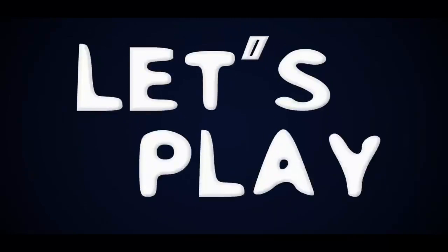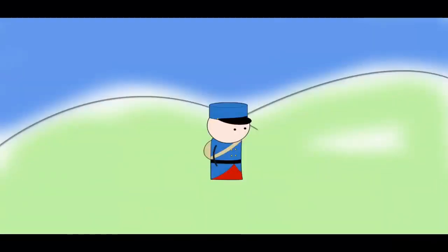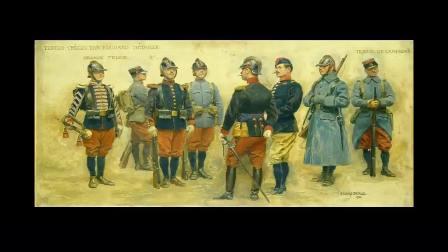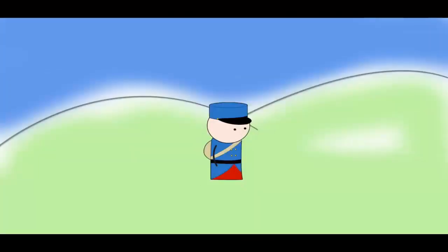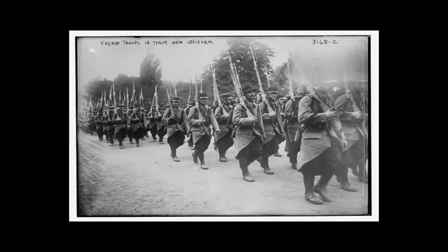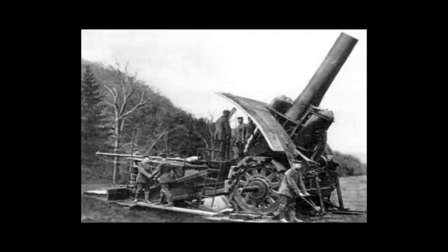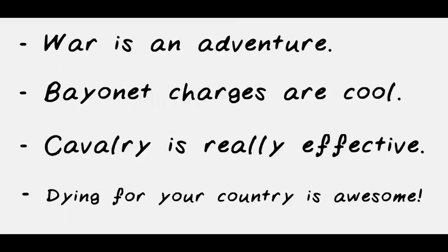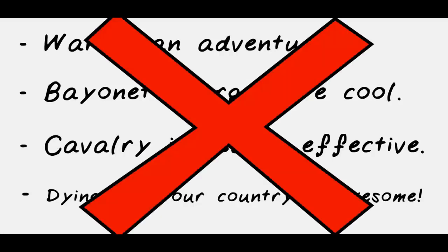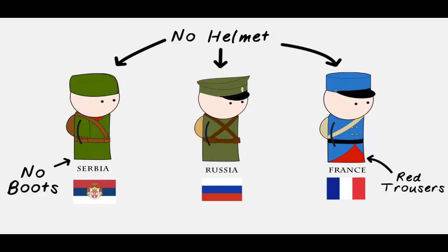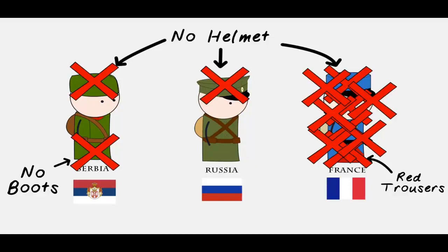The French soldiers wore bright blue uniforms with red trousers — highly visible targets. The Germans easily spotted them as they marched in columns through the countryside and tore them apart with artillery. All nations entered the war with an old-school mentality, and all had to rapidly update their uniforms and tactics, because this war would be like nothing anyone had ever seen before.